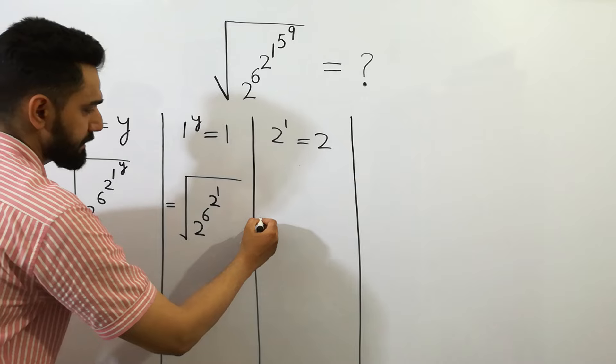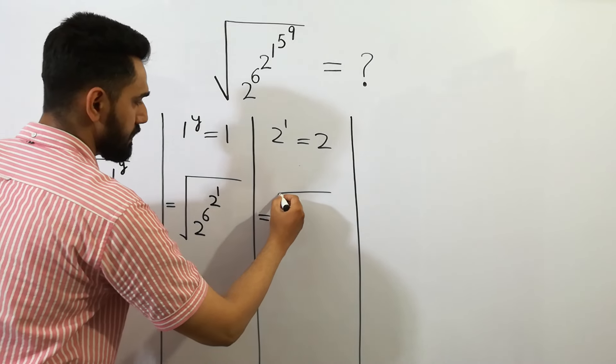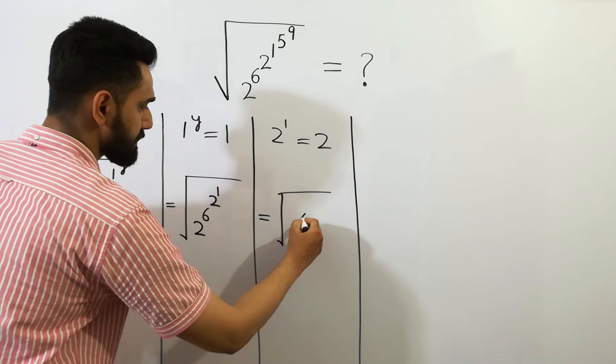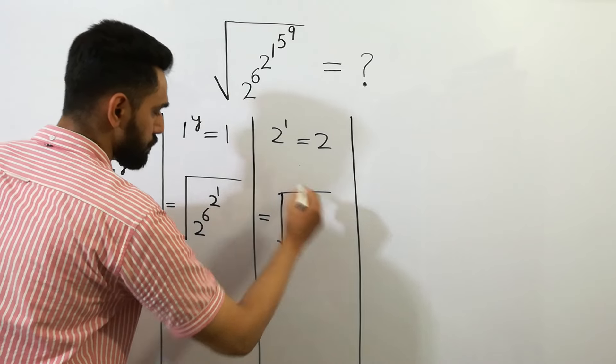So we can write 2 to the power 6 to the power 2. Clear?